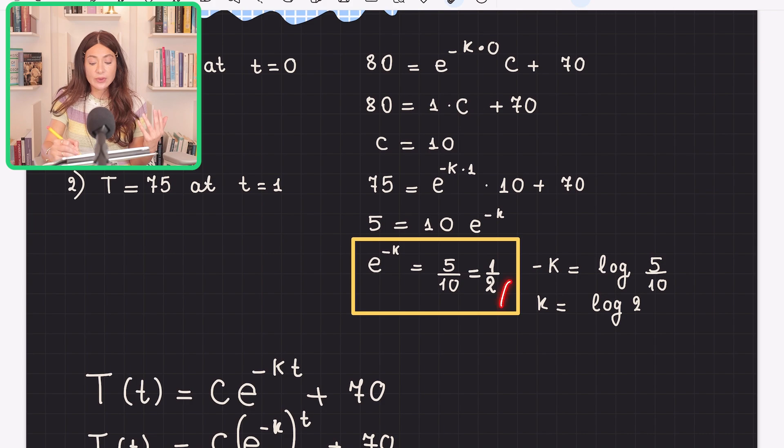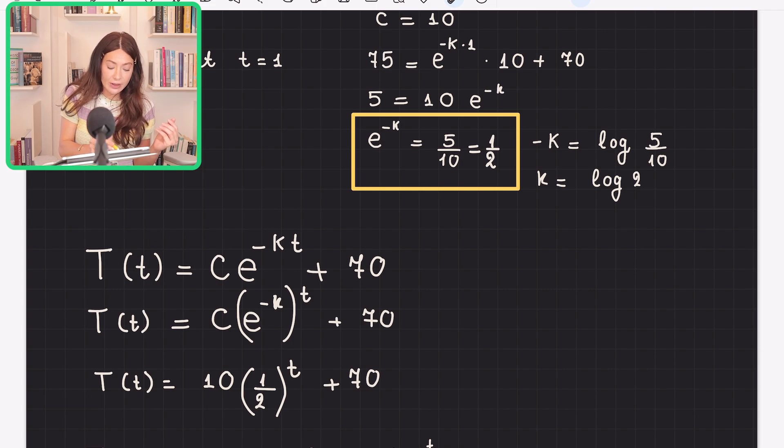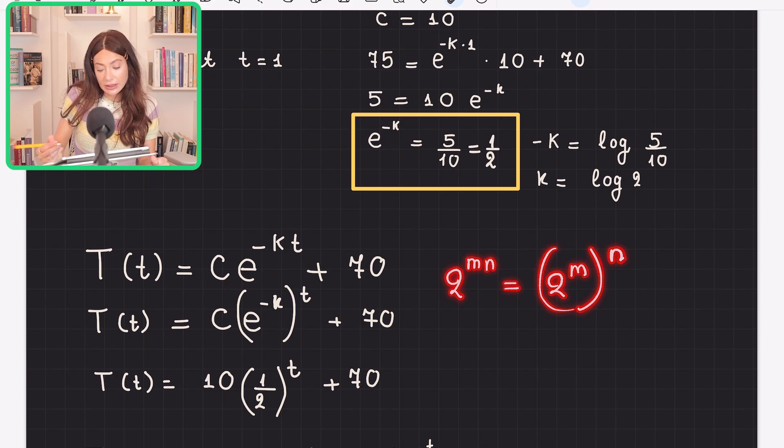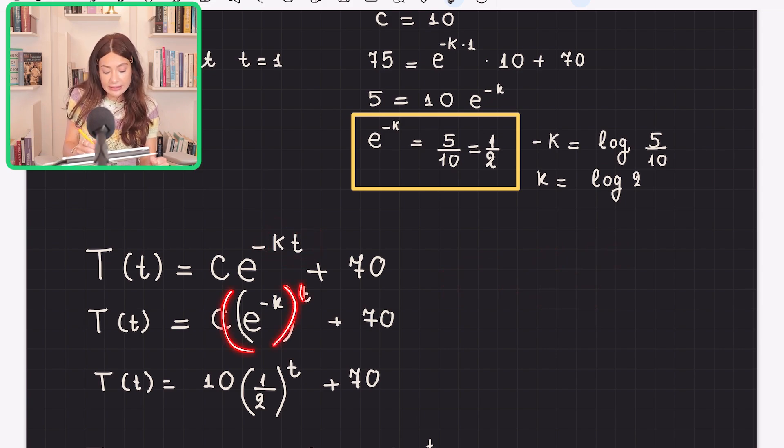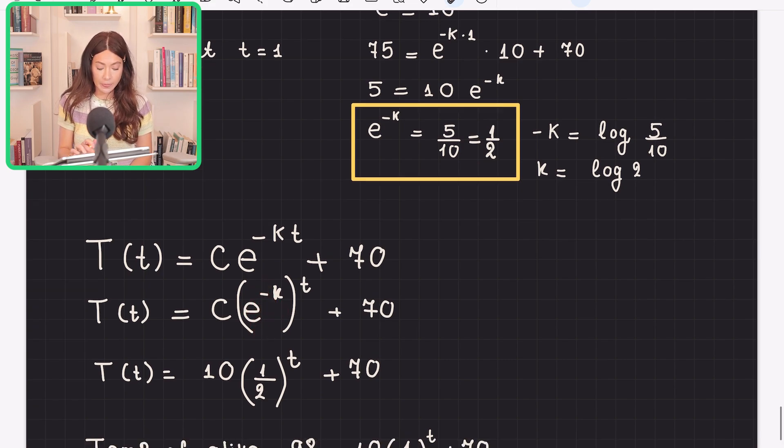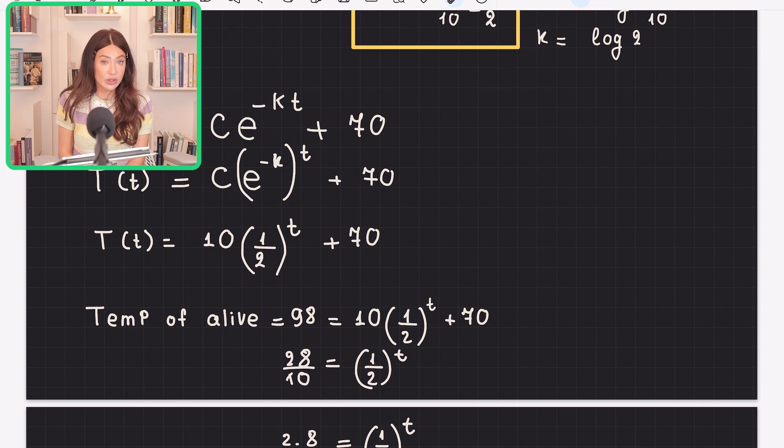I will stop here because this is the equation that tells me the temperature of the man at any time. I can write this as a product here. Remember that 2 to the M times N equals 2 to the M-N. So I will just write this as all raised to power T. And this E to negative K equals one over two, so I will write one over two here. This is my equation. This is a specific equation to the specific man that we have in front of us that died.